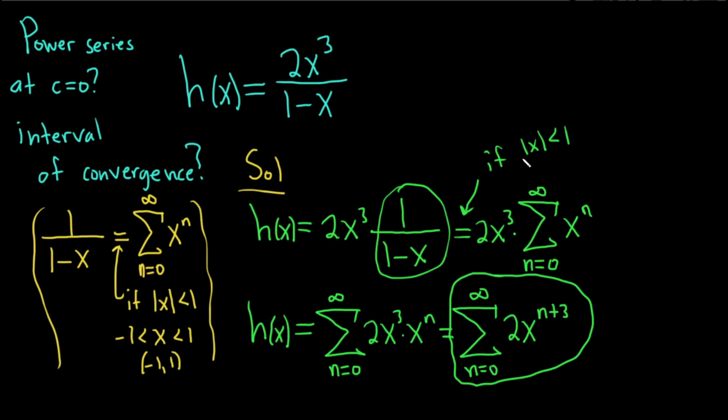And this is only valid when the absolute value of x is less than 1. So that's going to give us the interval of convergence. If you have the absolute value of x less than 1, that means x is a number whose distance from 0 is less than 1. So x must be between negative 1 and 1.